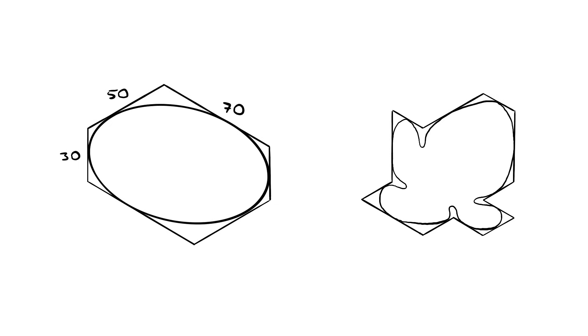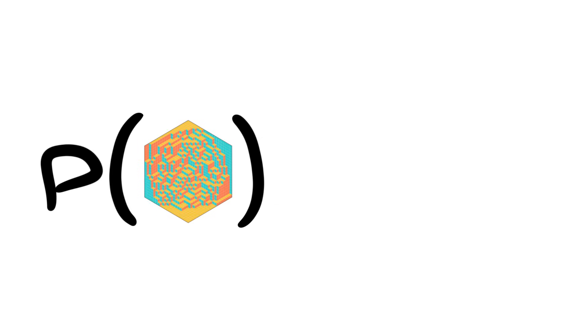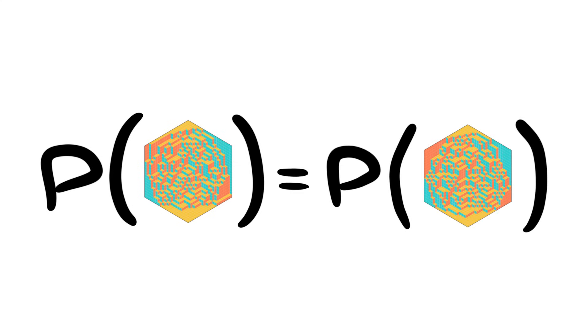So far, we've been assuming that the distribution of these tilings is uniform, so each one has the same probability of being picked. Naturally, if we choose a different probability distribution, the typical shape of the arctic curve will also be different.